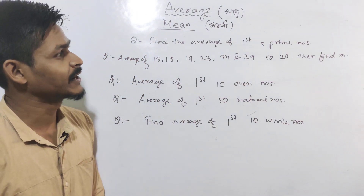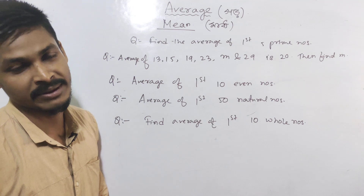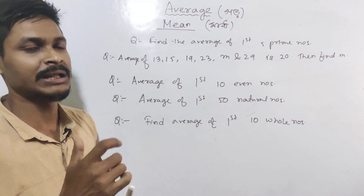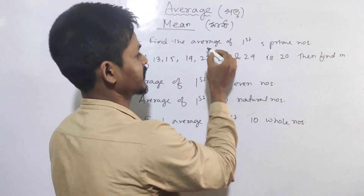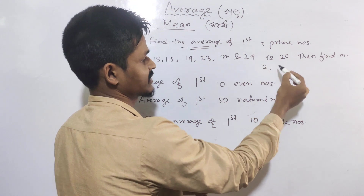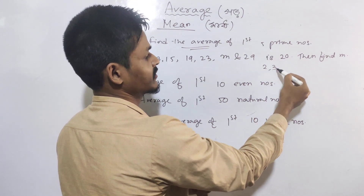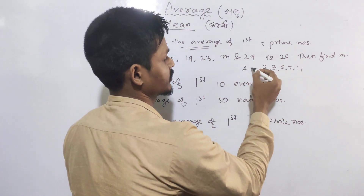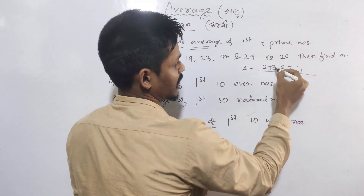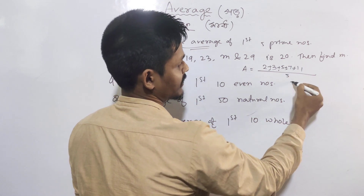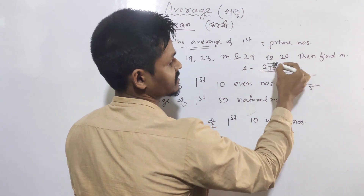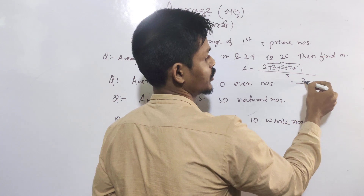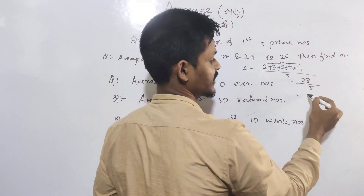Find the average of the first 5 prime numbers. The first 5 prime numbers are: 2, 3, 5, 7, 11. To find the average, add them: 2 plus 3 is 5, plus 5 is 10, plus 7 is 17, plus 11 is 28.